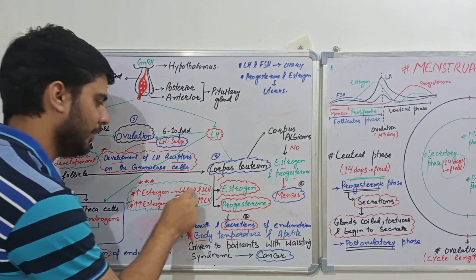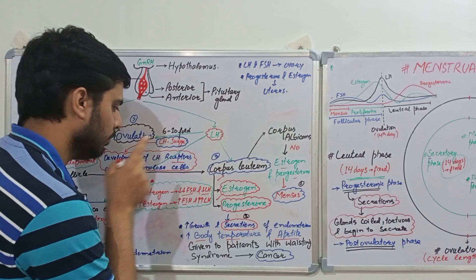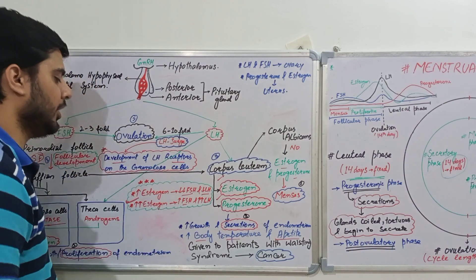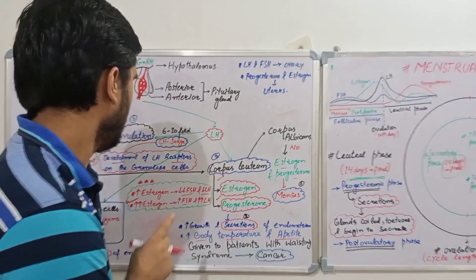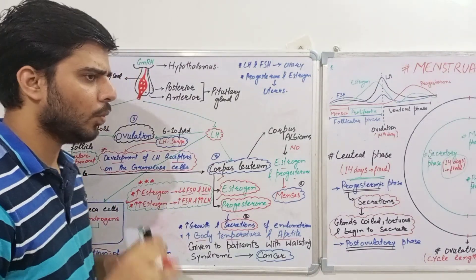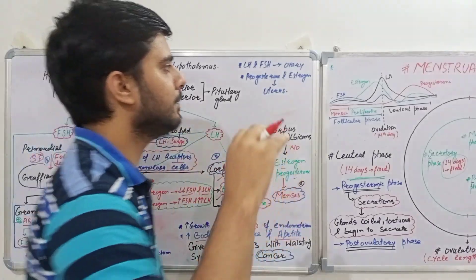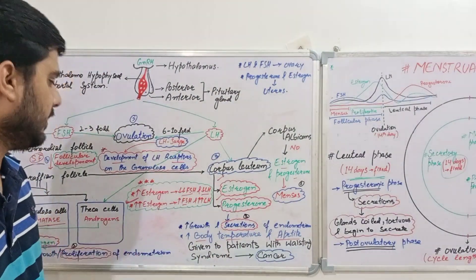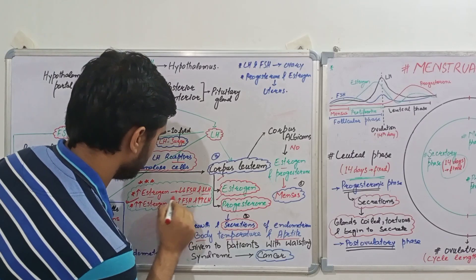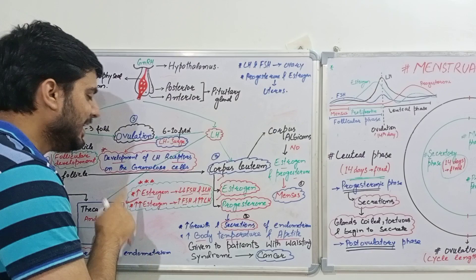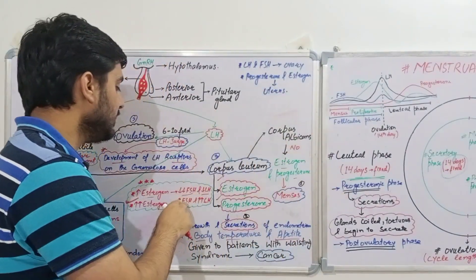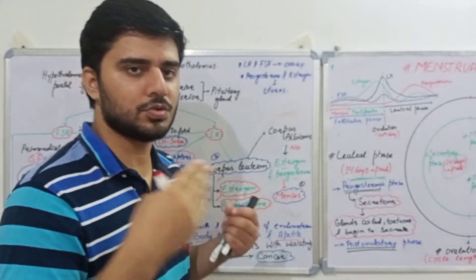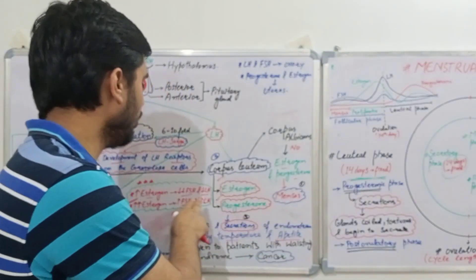Higher levels of estrogen inhibit both FSH and LH, but inhibit FSH more than LH. Then comes the most important and unusual phenomenon in the female reproductive system. When estrogen becomes very high — passing a certain threshold — it changes its negative feedback to positive feedback. So while high estrogen inhibits FSH and LH, very high estrogen will actually cause an increase in the synthesis of both FSH and LH.